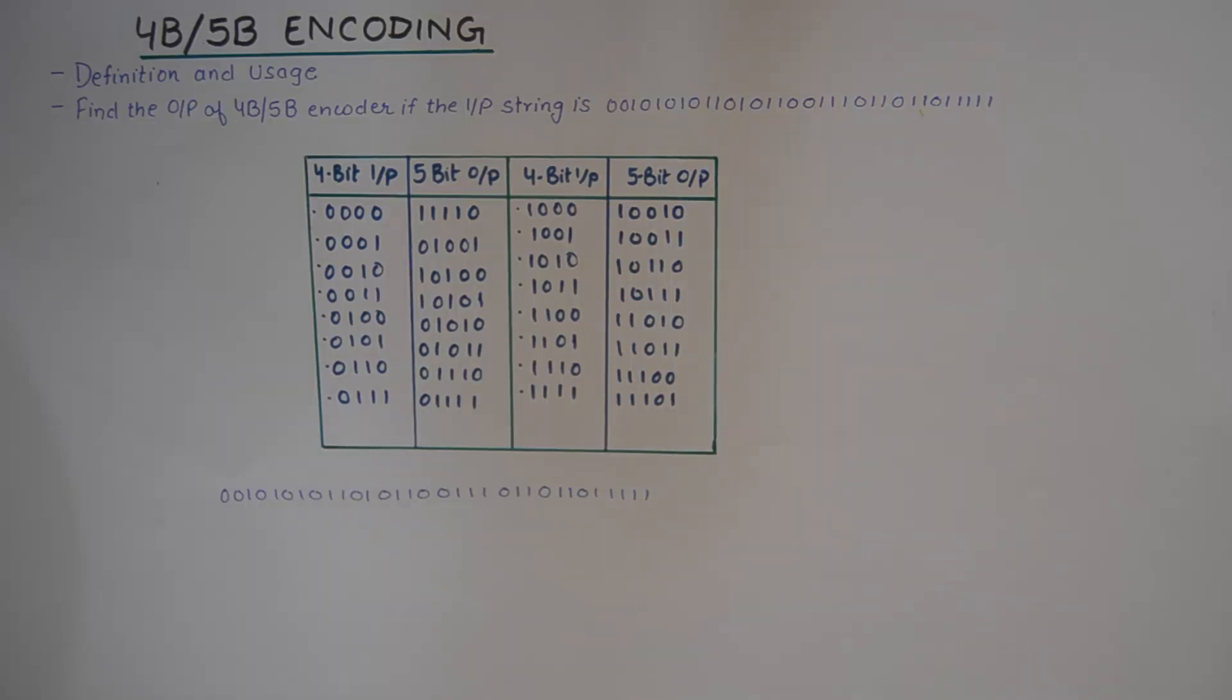Hello friends, welcome to another tutorial in the series of Information Theory Encoding. In this tutorial we'll talk about an encoding scheme which is not very popular but has its own importance, and the name of that encoding scheme is 4b5b encoding.